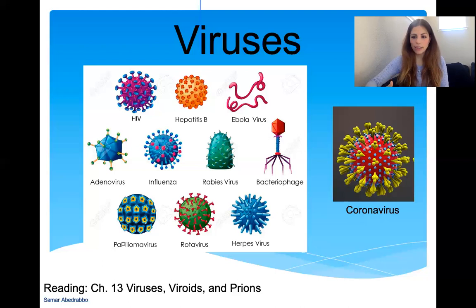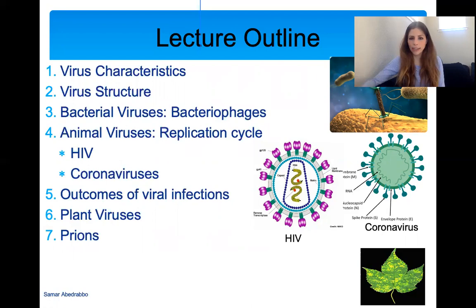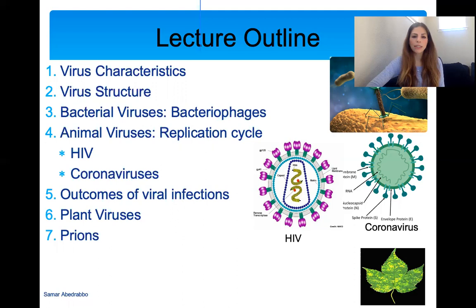I'm hoping that this is a fun and relevant lecture for you guys since most of you want to be nurses and go into healthcare. In this lecture, we're going to talk about various virus characteristics, the structure of viruses, bacteriophages, which are viruses that specifically infect bacteria, and animal viruses and their replication cycle. We'll save the pathogenesis and disease-causing animal viruses for later in the semester, but we will talk about HIV and coronavirus here because they are two good viruses to study how viruses in general replicate in human cells. And then outcomes of viral infections like acute infections, latent infections, and chronic infections.